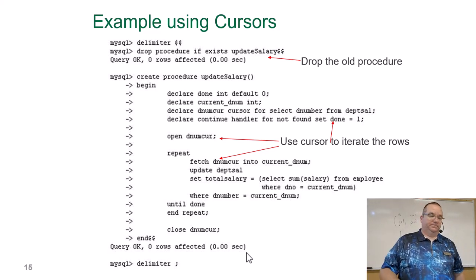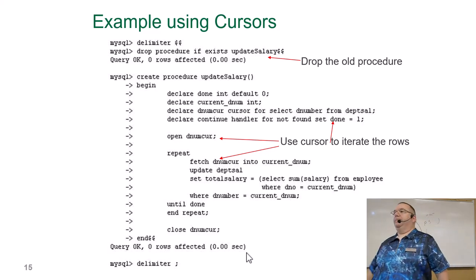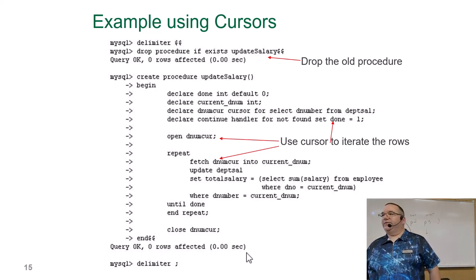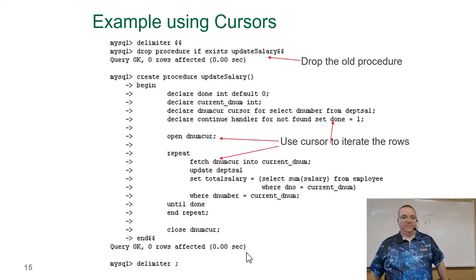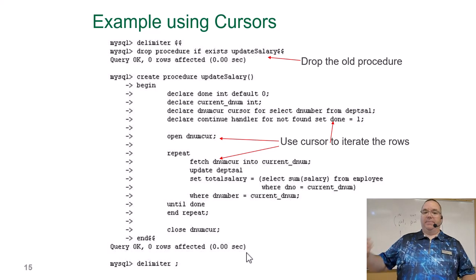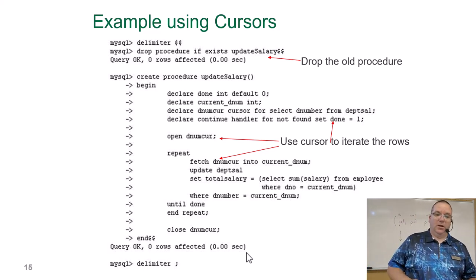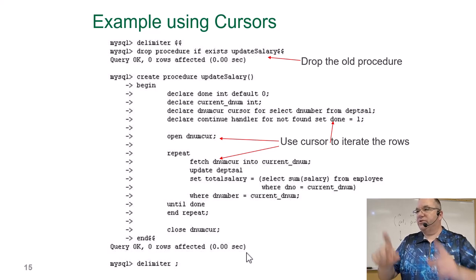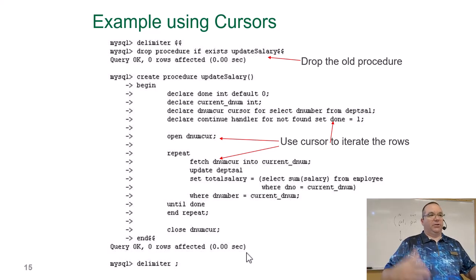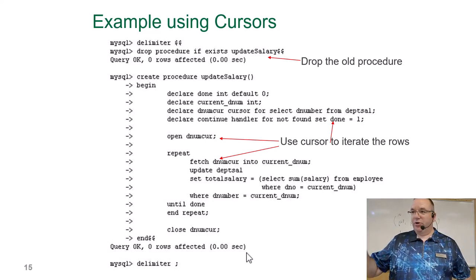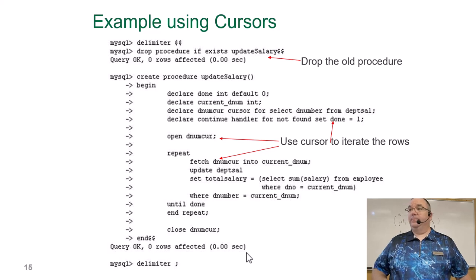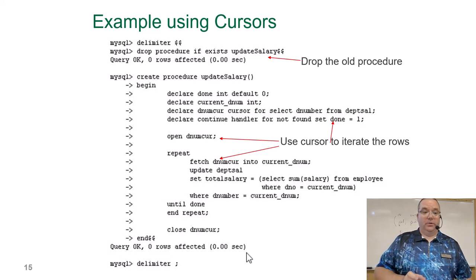We have our BEGIN block. Now we're going to declare some variables. We declare a variable called done — it's an integer defaulting to zero. Why is it an integer? Because MySQL doesn't have Booleans. So zero means it's not done, one means it's done. We declare current_department_number as an integer. So far it just looks like normal variable declarations — the syntax is different but the concept is the same.